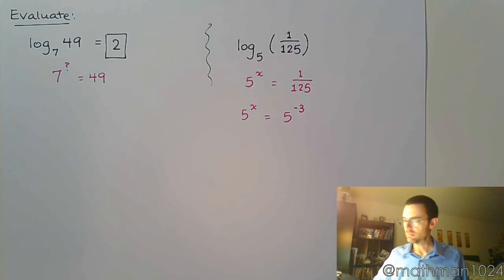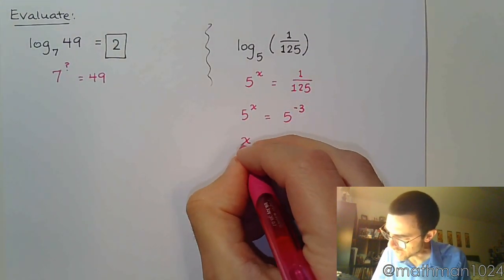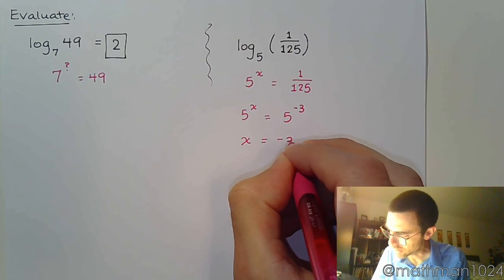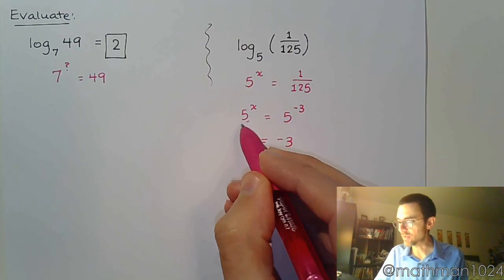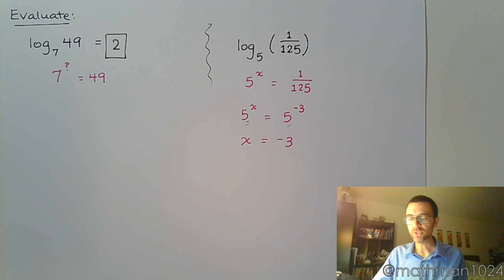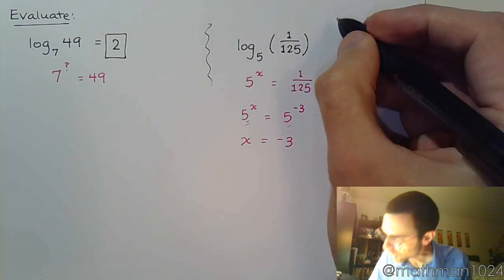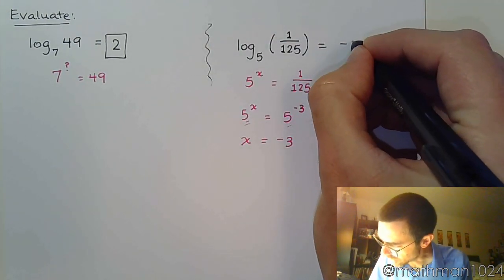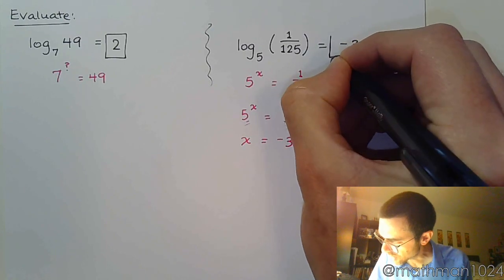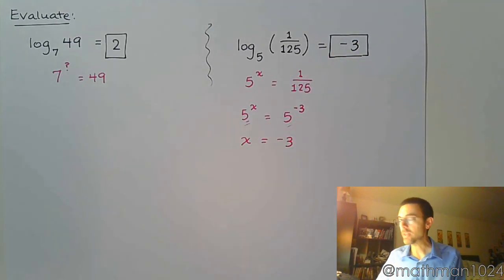And in that case, we've got the answer. We know that x is equal to negative 3, because since these guys have the same base, that means their powers must be the same. So when we evaluate this logarithm, the answer is just negative 3. Just like that.